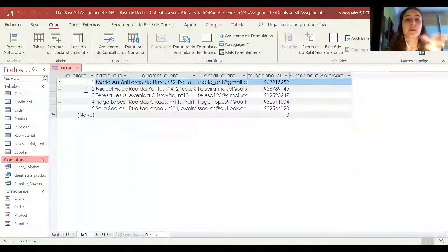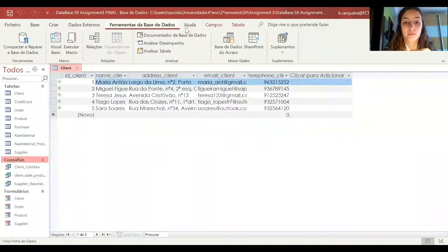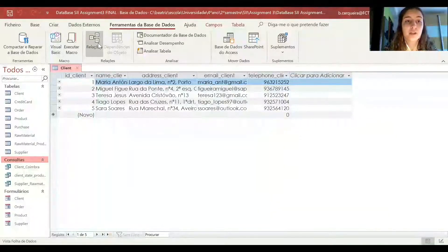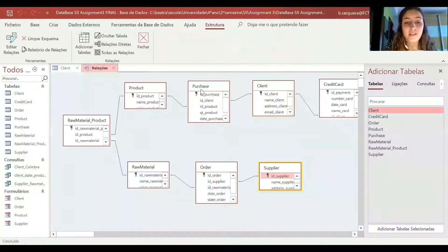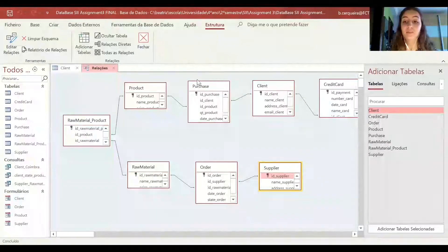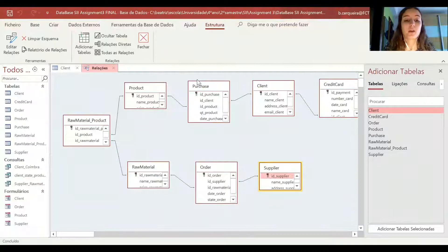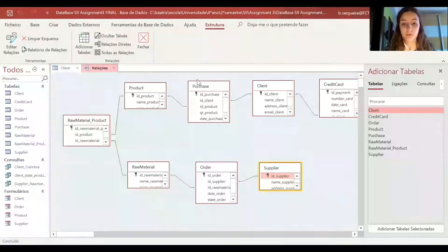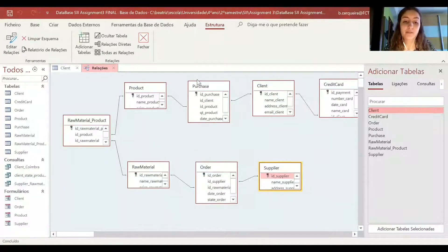After creating the tables, we went to the database tool separator and used the functionality relationships and this allowed us to establish the different relationships between the tables according to the foreign keys of each one and the result is pretty much similar to the database diagram shown before.